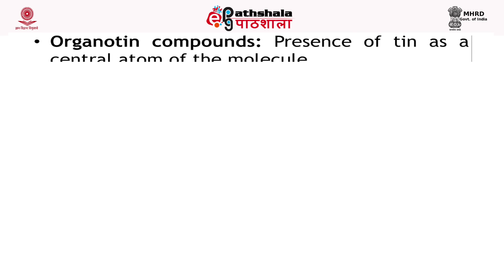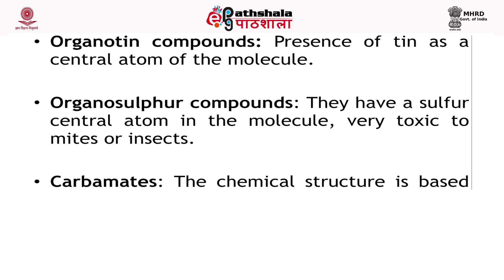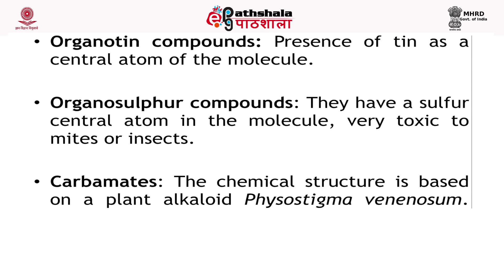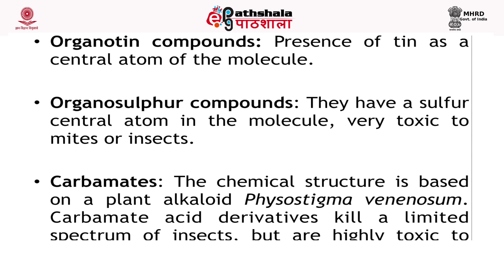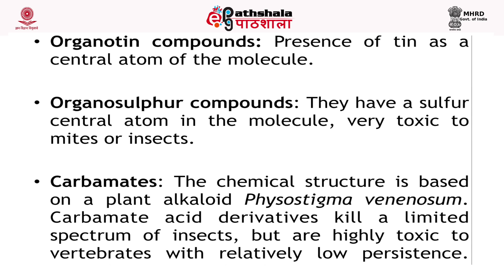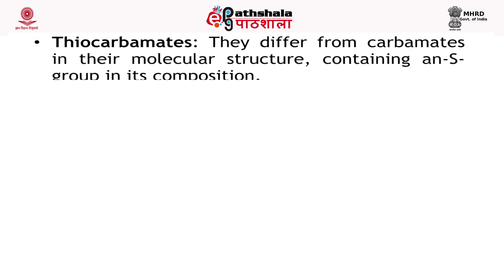Organotin compounds have tin as the central atom of the molecule. Organosulphur compounds have a sulfur central atom in the molecule and are very toxic to mites or insects. Carbamates: the chemical structure is based on a plant alkaloid physostigma venenosum. Carbamate acid derivatives kill an unlimited spectrum of insects but are highly toxic to vertebrates with relatively low persistence. Examples include Sevin (carbaryl) and thiocarbamates, which differ from carbamates in their molecular structure by containing a sulfur group.